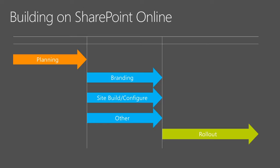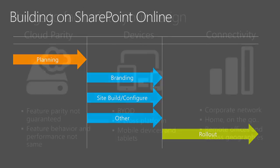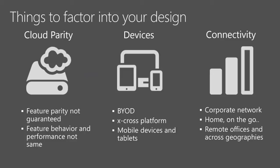Ideally all those pieces come together at the same time, and you get to a point where the structure is there, you start loading content, and you're ready for rollout. Sham is going to talk about rollout strategies at the end. This is the overarching idea about how this talk is structured — breeze through planning, talk about the stuff in the middle, and then Sham talks about rollout strategies.